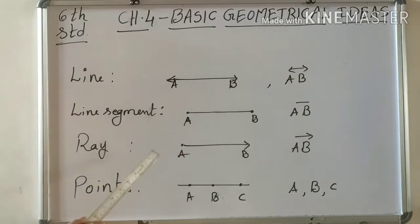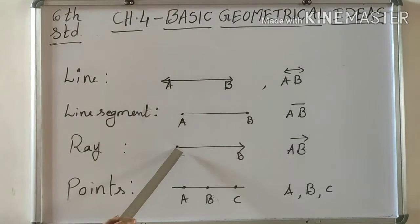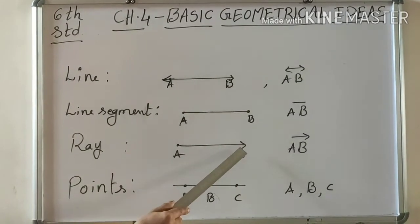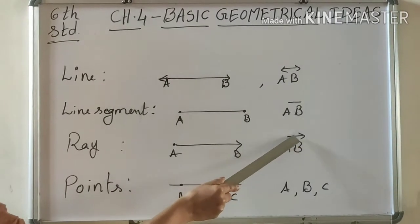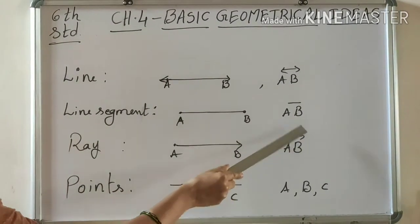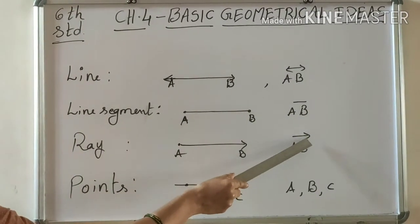We can measure line segments. And ray: a ray is fixed at one point in one direction, and in another direction it is infinite. We show a ray like this, with an arrow on one side only, because one side is infinite while the other is fixed.